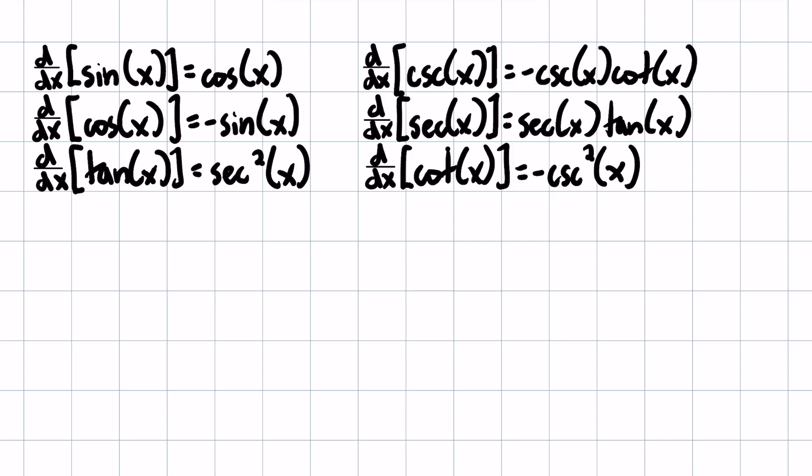These two, okay, sine becomes cosine, cosine becomes negative sine. Pretty easy. Tangent becomes secant squared, okay? Cotangent becomes negative cosecant squared. So these two are also very similar. And then these two, okay? Cosecant becomes negative cosecant cotangent. Secant becomes secant tangent. So those two are also very similar.